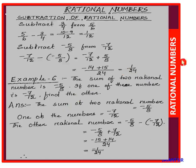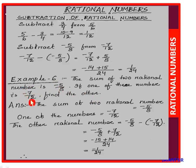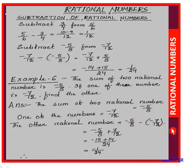Next problem: the sum of two rational numbers is -5/8 and one of them is -7/12; find the other. The sum equals -5/8 and one number equals -7/12, so the other rational number equals -5/8 minus (-7/12).